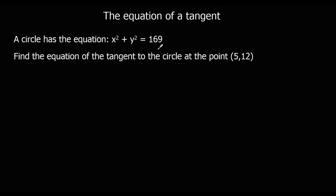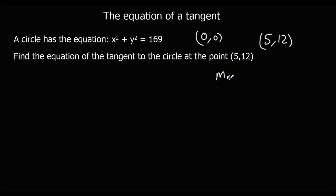Another example without the drawing. We've got a circle with center (0, 0), and we want the tangent at the point (5, 12). The gradient of the radius: change in y is 12, change in x is 5, so using (y2 - y1) over (x2 - x1), that's 12 minus 0 over 5 minus 0, which gives 12 over 5.